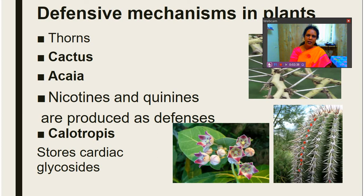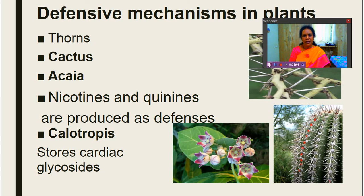There are defensive mechanisms in plants also. Plants have very sharp thorns, which is one way of defense — grazing animals cannot eat them. Some plants store chemical substances that are very harmful to grazing animals. Examples include thorns of cactus, acacia, and alkaloids present in plants like nicotine and quinines, which are very harmful to animals.